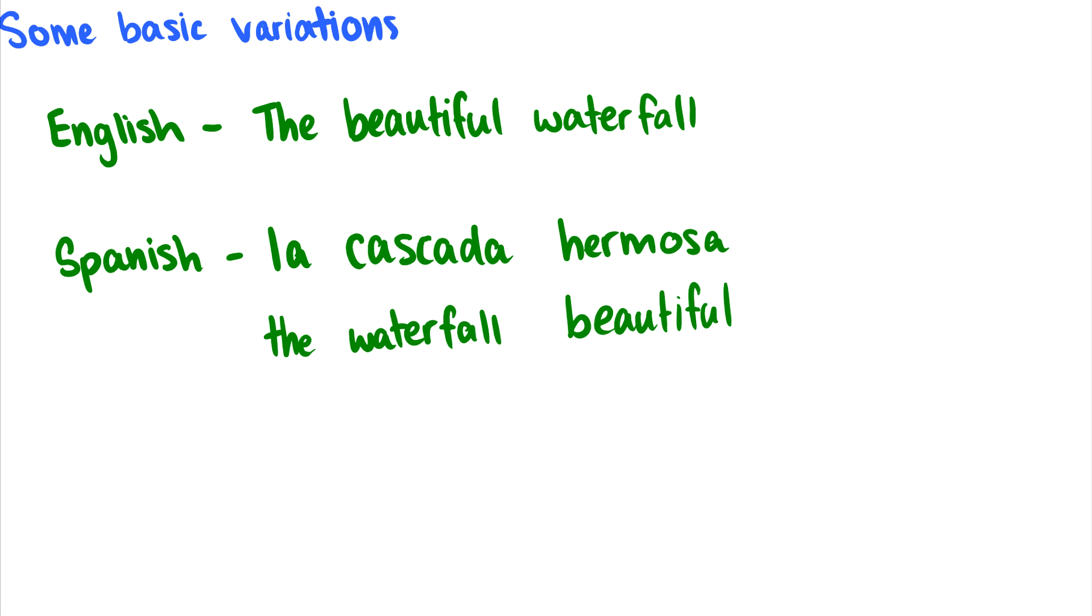So let's take a look at some of the basic variations we can get. And these are really basic variations. Enough that I think even without any syntactic background, you can get something out of this. Okay, so in English, we could say something like the beautiful waterfall, where we have an adjective coming right before the noun, and the adjective here modifies the noun. So the waterfall is beautiful.